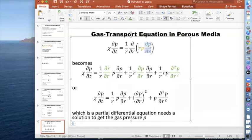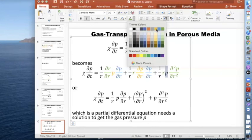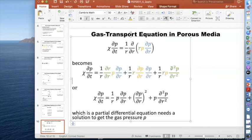Taking derivatives: the first term gives partial r by partial r, which equals one. The second term's derivative of p gives another partial p partial r. The third term's derivative gives partial p partial r squared. After simplification, r cancels in several places, giving us partial p partial r squared plus one over r times partial p partial r.